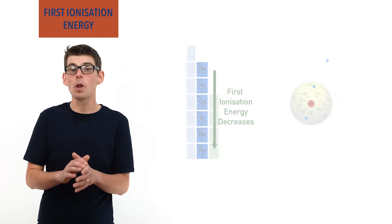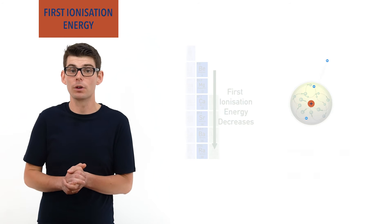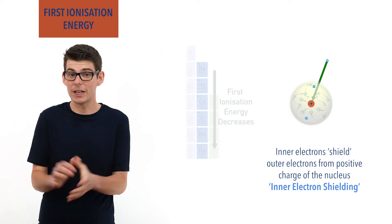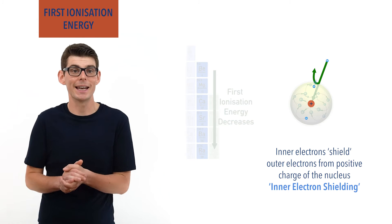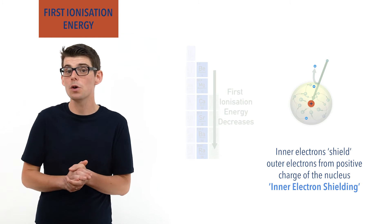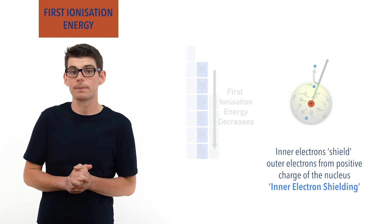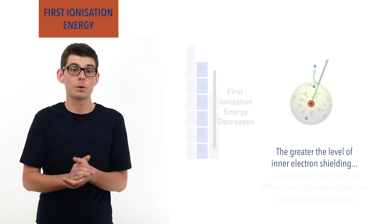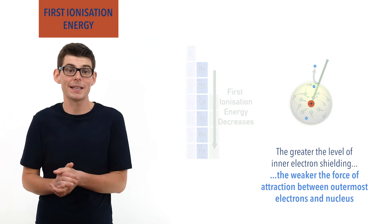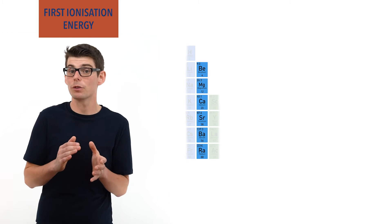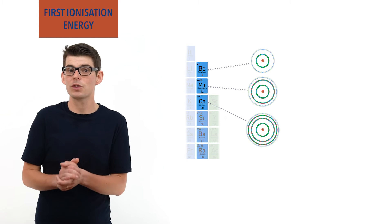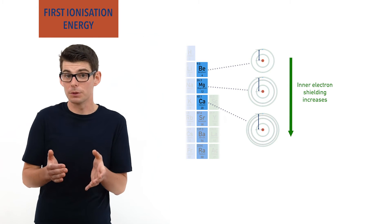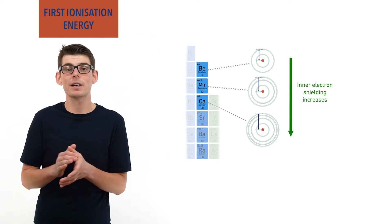The inner electrons in an atom block or shield the positive charge of the nucleus from the outer electrons — this is referred to as inner electron shielding. As outer electrons get attracted to the nucleus and are pulled in tighter towards it, they start to get repelled by inner electrons. This repulsion reduces the overall attraction force between the outer electrons and the nucleus. The greater the level of inner electron shielding, the weaker the force of attraction, making it easier to remove an electron. As elements below each other in a group have more inner electron shells, the level of shielding is greater, meaning outer electrons are further from the nucleus and experience a weaker attraction.